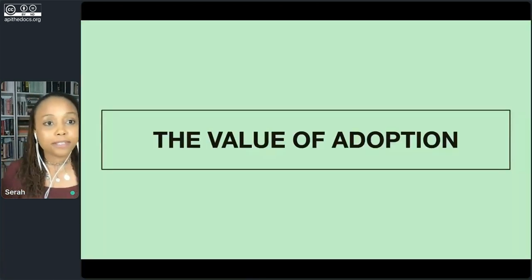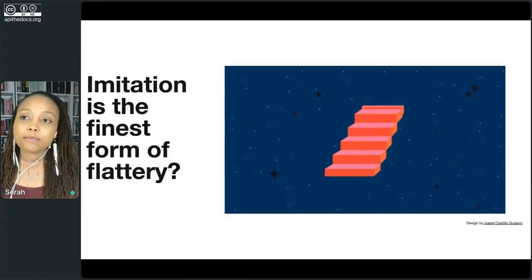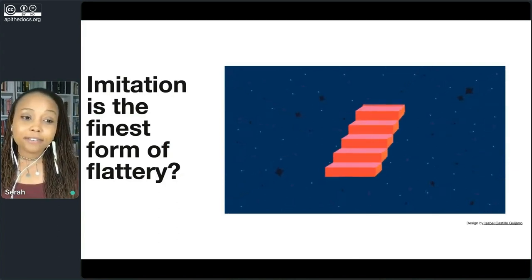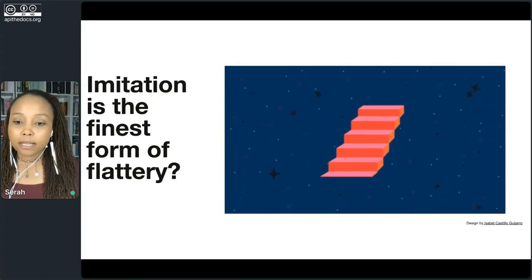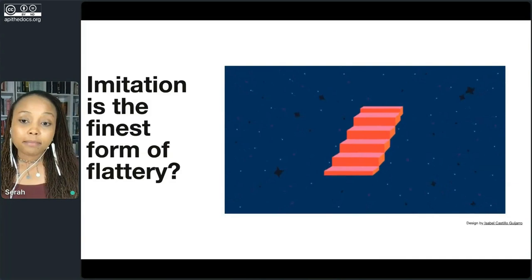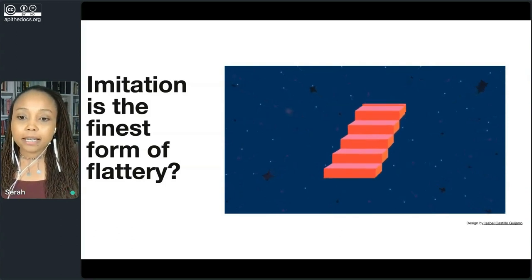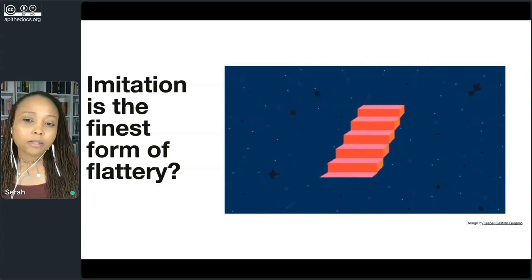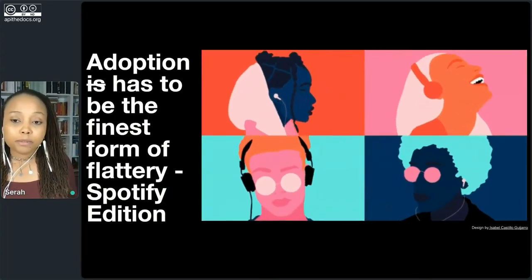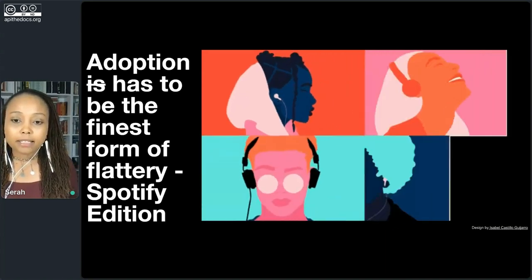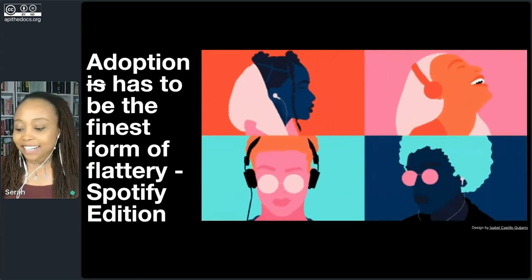Let's talk about the value of adoption. For a long time we've heard that imitation is the finest form of flattery, and this likely works well in many different fields. But in tech, and particularly as we build, design, develop, and maintain APIs, imitation doesn't work quite as well. What we are trying to do is empower myriads of people to do as many different things with the APIs that we set up as possible. Adoption surely has to be the finest form of flattery in this case.